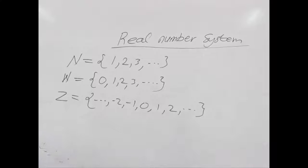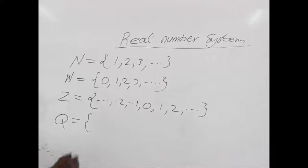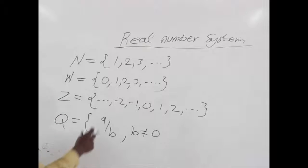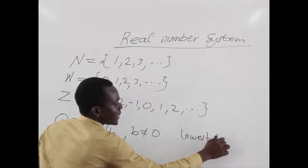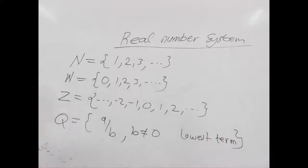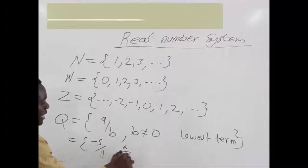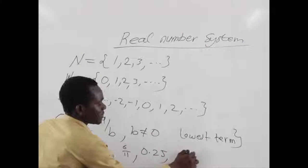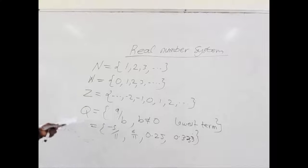After that we have another bigger set which we call rational numbers. Rational numbers can be written in the form A over B — that is, in fraction form — such that B is not equal to 0, and A and B are in their lowest terms. They all belong to real numbers. Examples are minus 5 over 11, 6 over 11, 0.25, 0.33, and so on and so forth.